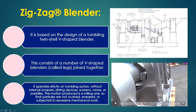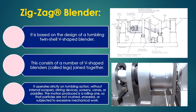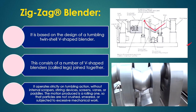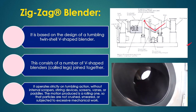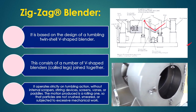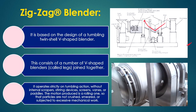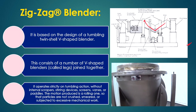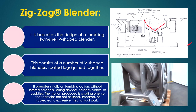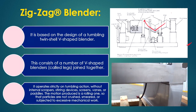The zigzag blender is a specially designed continuous mixer based on the design of a tumbling twin-shell V-shaped blender. It consists of a number of V-shaped blenders called legs joined together. It operates strictly on tumbling action without internal scrapers, stirring devices, screens, vanes, or paddles. The motion produced is a rolling one, so particles are not crushed or smeared or subjected to excessive mechanical work. It must operate at a gentle flow rate to avoid crushing materials.